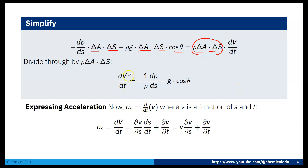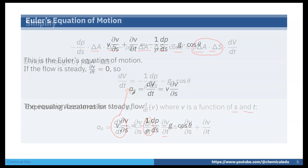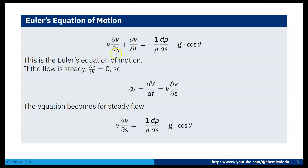Since V is a function of S and t, the acceleration dV/dt can be expanded as: dV/dt = (∂V/∂S)(dS/dt) + ∂V/∂t. Since dS/dt = V, this becomes V(∂V/∂S) + ∂V/∂t. Substituting this into the equation gives: V(∂V/∂S) + ∂V/∂t = −(1/ρ)(dP/dS) − g cosθ. This is the Euler equation.